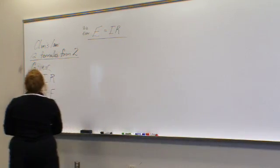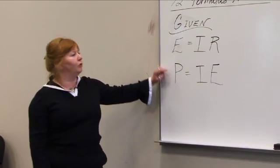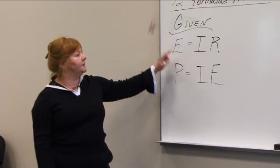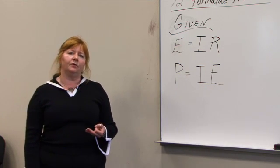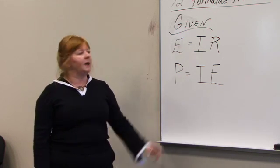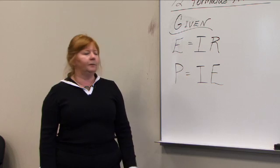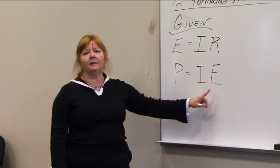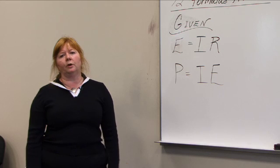The two formulas that I want us to begin with that you should commit to memory are basic Ohm's Law, which is voltage equals current times resistance. I'm just going to use the letters that represent this information. E equals I times R. And the other formula is P equals I times E. So these are two of the 12 formulas that I'm going to be working through today.